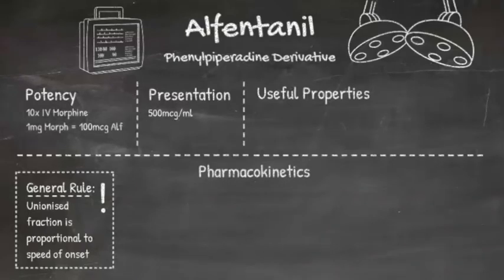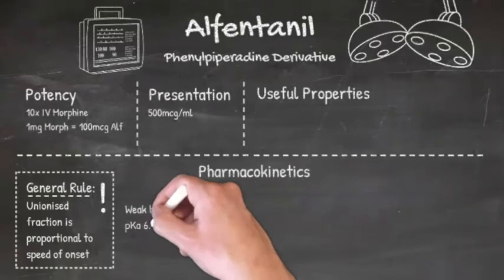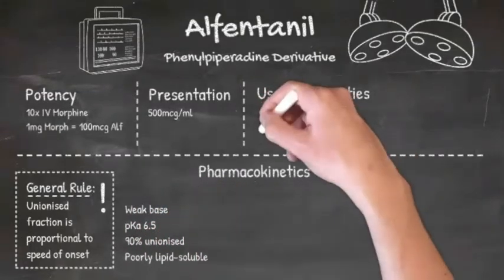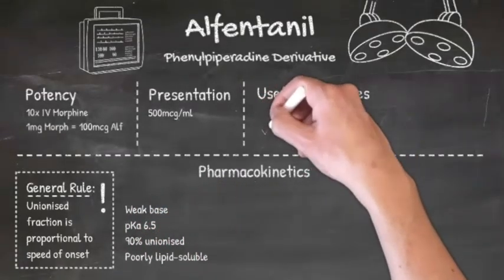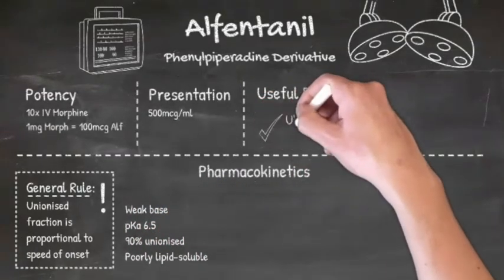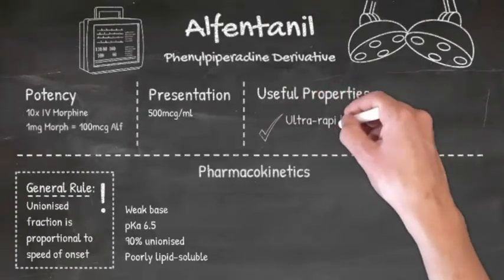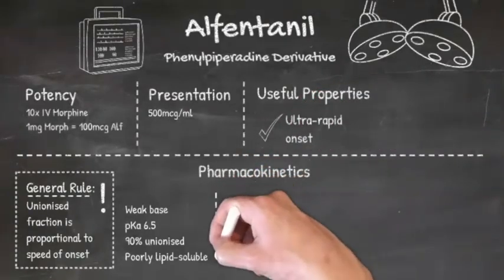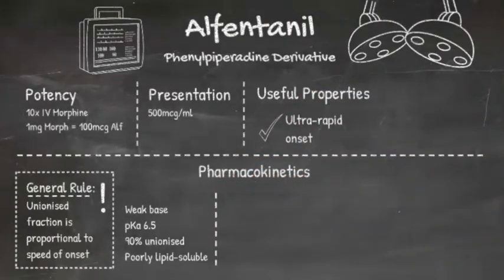Alfentanyl has a lower pKa than fentanyl of 6.5, and so 90% of it is unionised at physiological pH, and that means its onset is even faster than fentanyl, with peak onset in 1-2 minutes of injection.